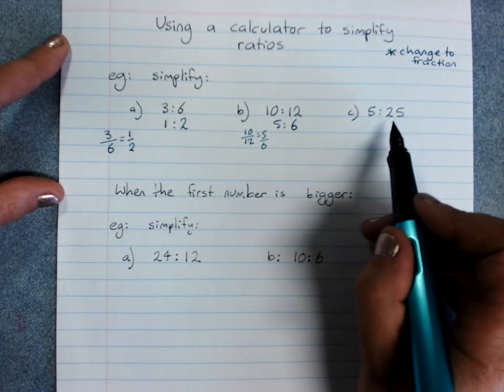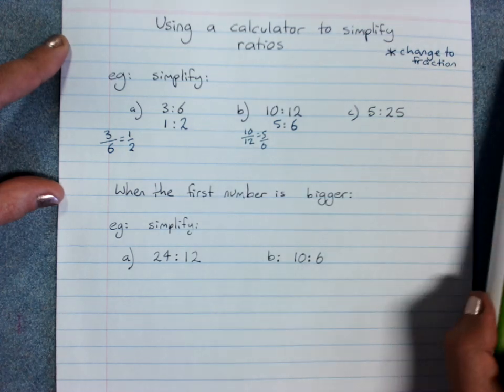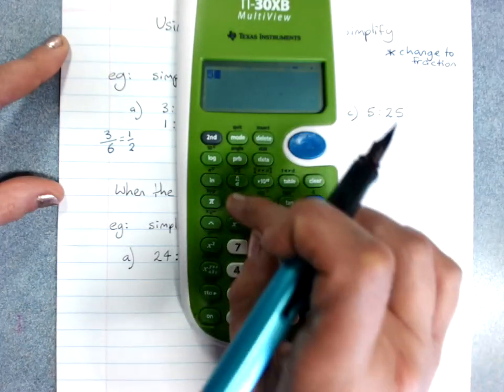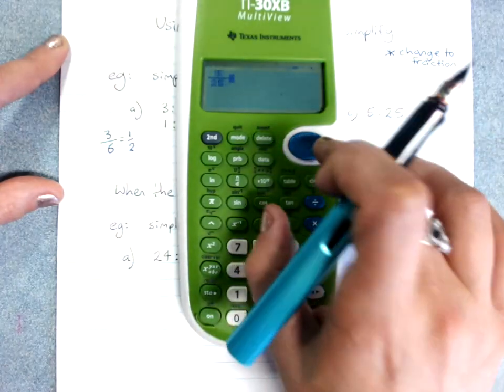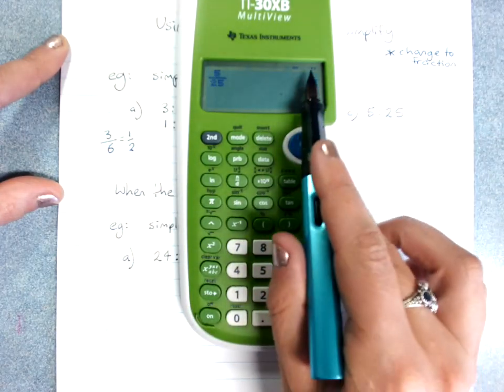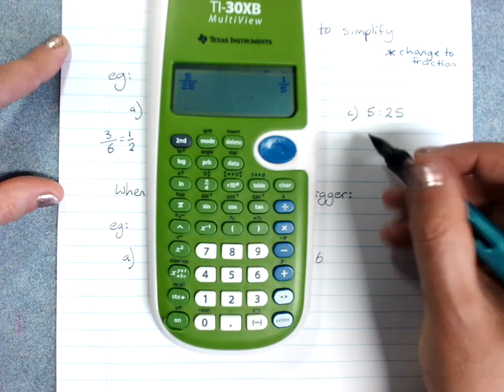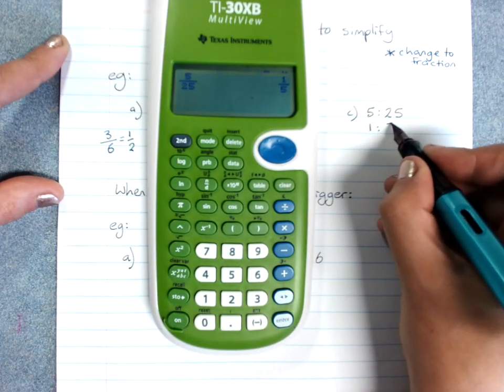5 to 25. Make that 5 over 25. Get the answer 1 over 5 and change it back into a ratio.